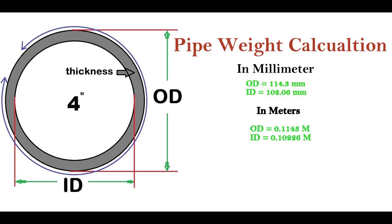OD of 4 inch pipe is 114.3 mm and ID of 4 inch pipe is 102.06 mm. When we convert into meters, as we know that 1 meter equals 1000 mm, so when we convert,